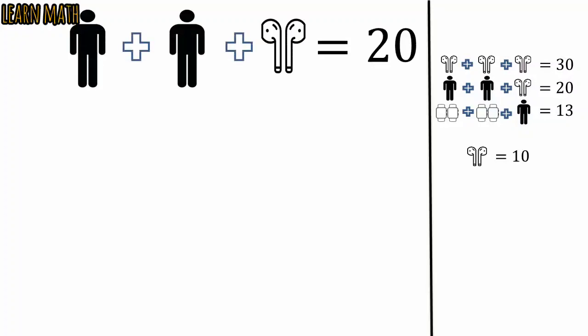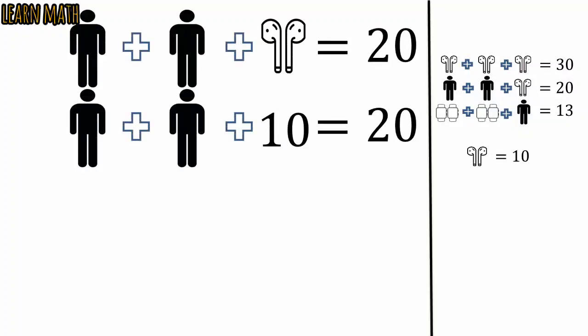The second equation is this one. We will put ear parts is equal to 10 in this equation. We will get this, subtract 10 from 20 and we will get two men is equal to 10. Dividing both sides by 2 and we will get one man is equal to 5.